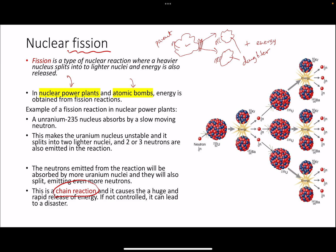This is what we call a chain reaction. On its own it is very uncontrolled, and a huge amount of energy is released in a matter of seconds, which can lead to an explosion — the entire reactor in the power plant can basically just explode. The uncontrolled version of this reaction is essentially your atomic bombs. In nuclear power plants, we need this reaction to be controlled.